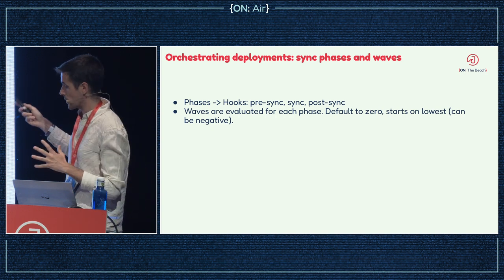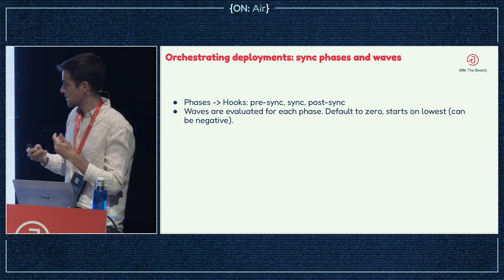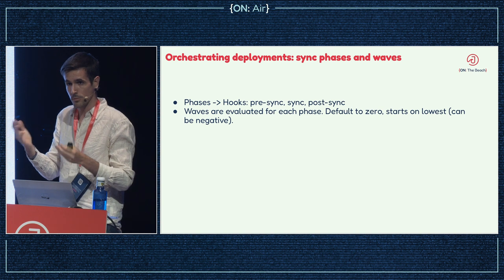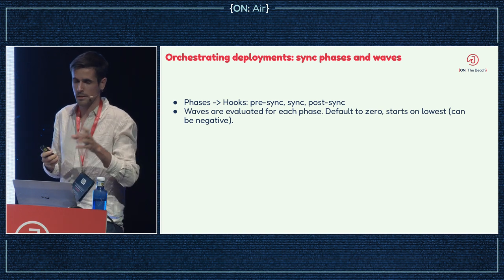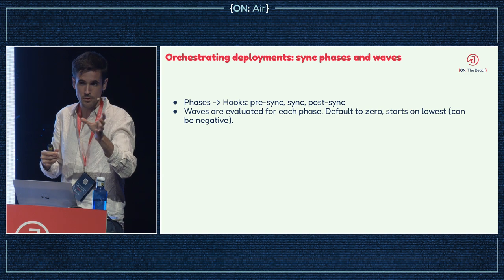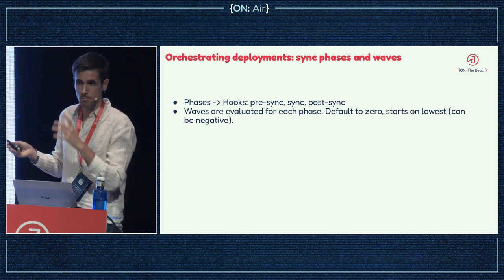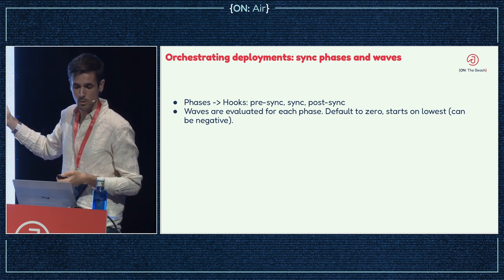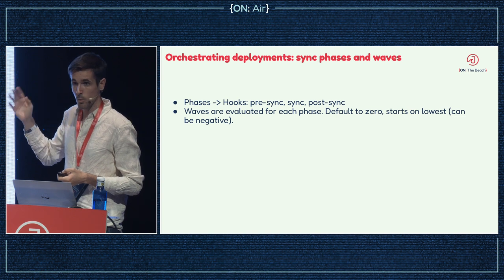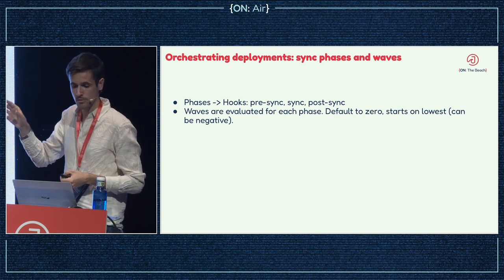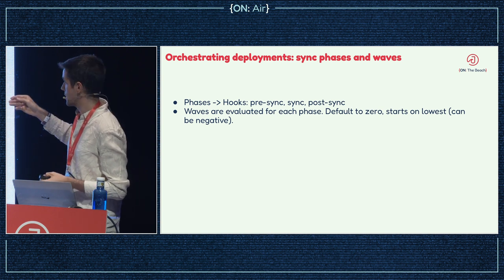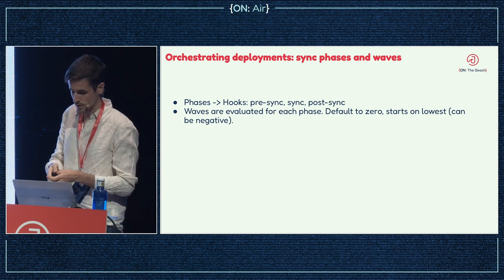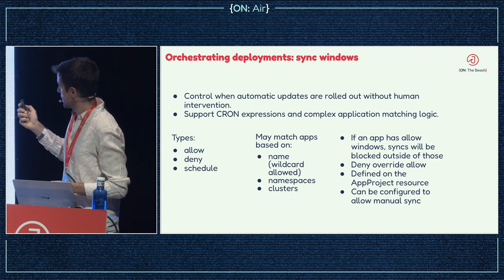Related to that, Helm offers tools to order the resources being deployed in a release — for example, a database migration job first, then image deployments, then another job to verify APIs. ArgoCD can also do this ordering, but similarly you have to adjust some annotations to make it work rather than relying on Helm's native hook ordering.